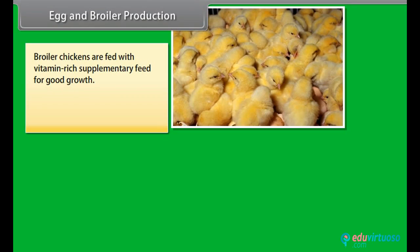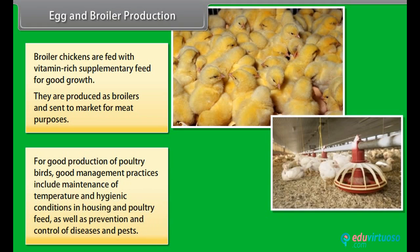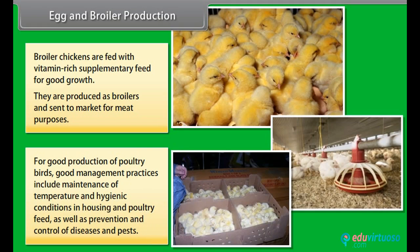Broiler chickens are fed with vitamin-rich supplementary feed for good growth. They are produced as broilers and sent to market for meat purposes. For good production of poultry birds, good management practices include maintenance of temperature and hygienic conditions in housing and poultry feed, as well as prevention and control of diseases and pests.